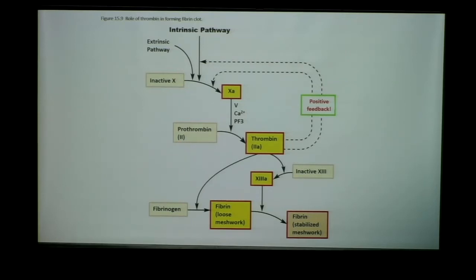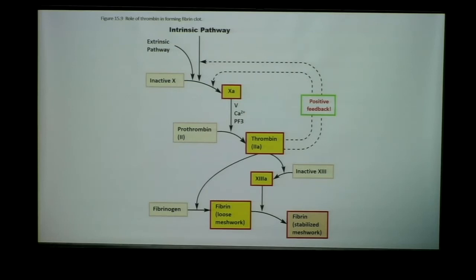Let me back up and explain. In our blood, we have lots of different plasma proteins called clotting factors. They're always circulating in our blood, which allows them to be sequestered whenever we have an injury — we don't have to make them on the spot. They're named according to whether they're activated or inactivated. The number represents the inactive form of that factor, whereas a small 'a' represents the active form.